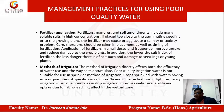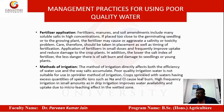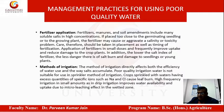In sprinkler irrigation, field crops sprinkled with water having excess quantities of ions such as sodium and chloride may cause leaf burn, so such water should not be used for sprinkling. High frequency irrigation in small amounts, as in drip irrigation, improves water availability and uptake due to a micro-leaching effect in the wetted zones. Drip irrigation plays a very important role in altering the use of poor quality waters.